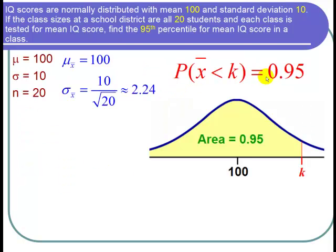So now in a picture, 0.95 corresponds to the area under the normal curve, to the left of this value K that we're looking for. And the mean is 100, so I place 100 in the center.